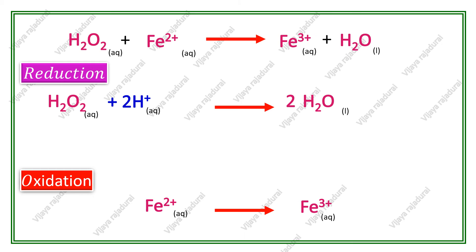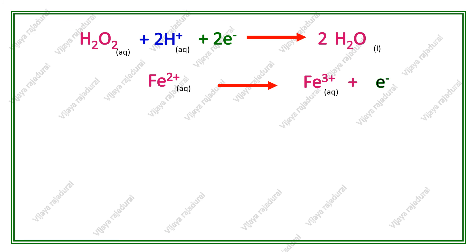The next step is to balance the charges on both the reactant and product sides. In the reduction reaction, H2O2 and H2O are neutral with zero charge. The 2 H+ ions contribute a charge of plus 2 on the reactant side, while the product side has zero charge. To counterbalance this, we add 2 electrons to the reactant side. In the oxidation reaction, 1 electron is released, so we add 1 electron to the product side.